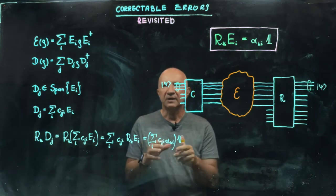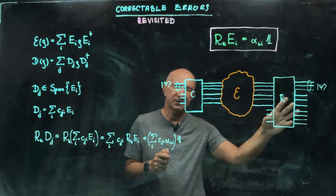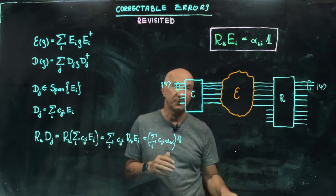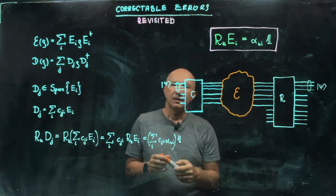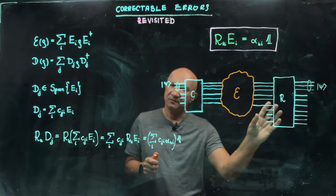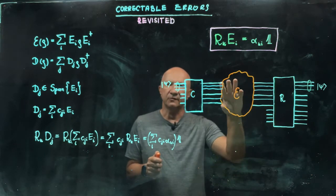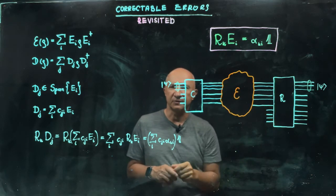And then you work hard to design encoding and recovery channel for this particular map E. The question is, is this construction custom-made for this particular completely positive map?